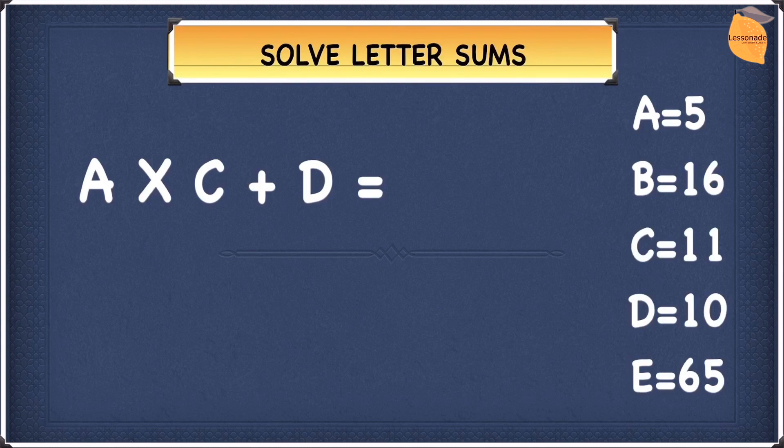Now, let's look at this example. In this example, each letter is given a number and we will have to work out the answer using each of these numbers. So, in our case, we have A equal to 5, B equal to 16, C equal to 11, D equal to 10 and finally E equal to 65.